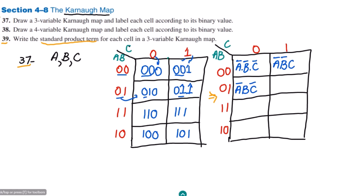For the next cell, only the first entry is zero so it is complemented, giving A' · B · C. Then A is 1, B is 1, C is 0, so C is complemented: A · B · C'. Where all three are 1, none are complemented, giving A · B · C. Then the last two are complemented: A · B' · C'. And where only the middle is zero: A · B' · C.